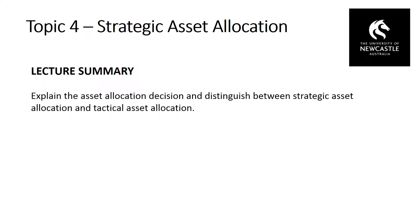Asset allocation is the decision of how to allocate your total wealth across asset classes. A simple example: you might decide to allocate 40% of your wealth to equities, 30% of your wealth to properties, and 30% of your wealth to bonds.